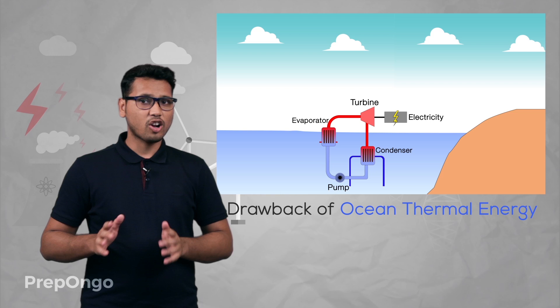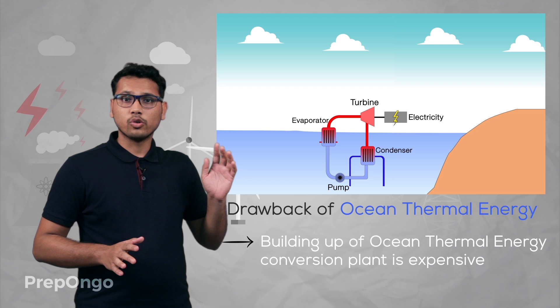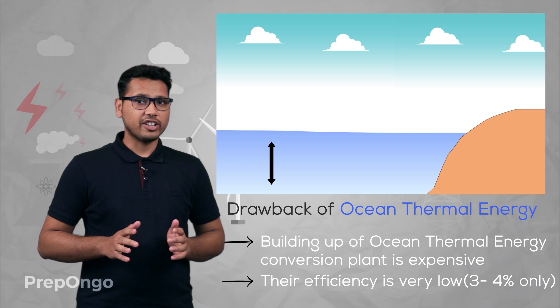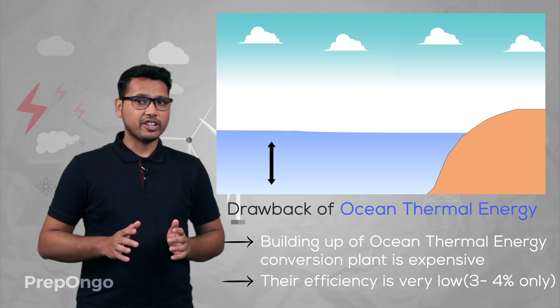Its major drawback is that there is a lot of capital investment on building up an ocean thermal energy conversion plant, and due to low temperature difference between the surface water and the deep waters, its efficiency is very low, around 3 to 4 percent only.